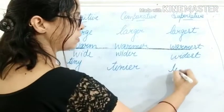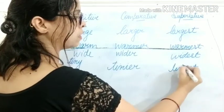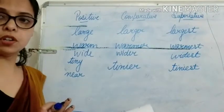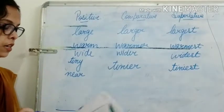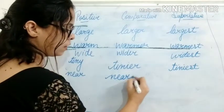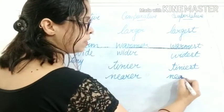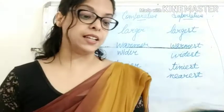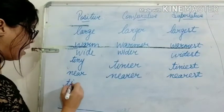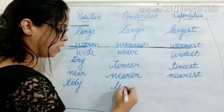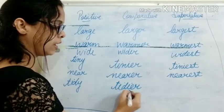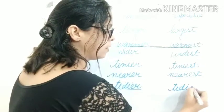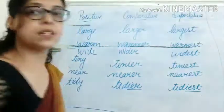Next is 'tidy.' T-I-D-Y. Tidy becomes: remove the Y and add IER — 'tidier.' And for superlative, remove Y and add IEST — 'tidiest.' T-I-D-I-E-S-T.